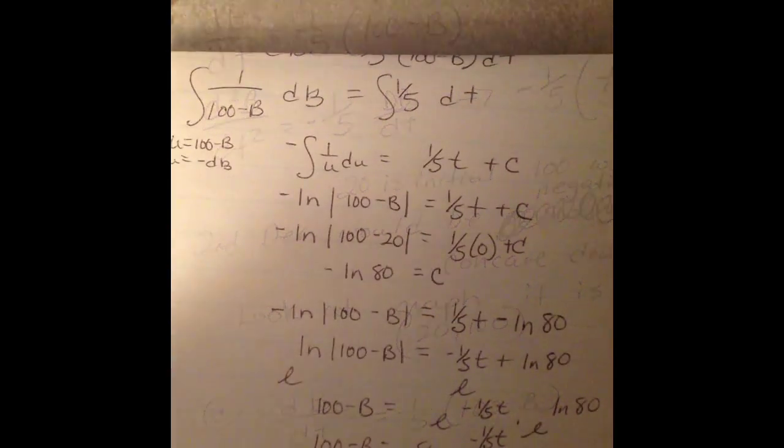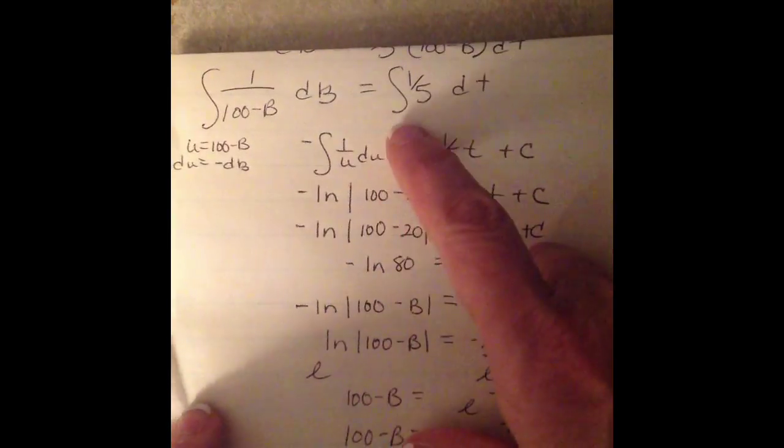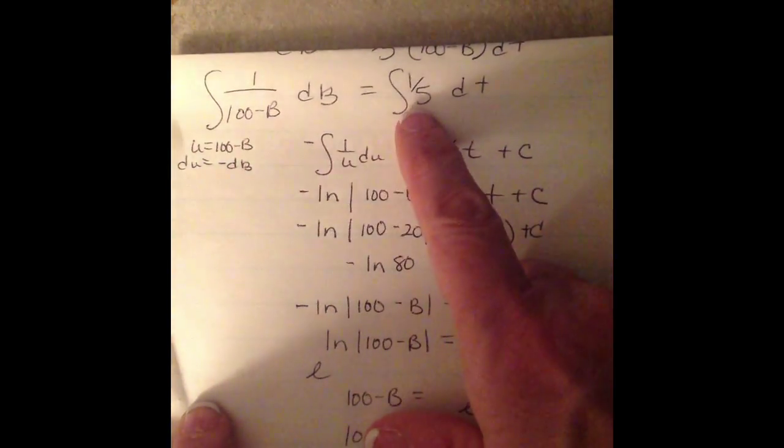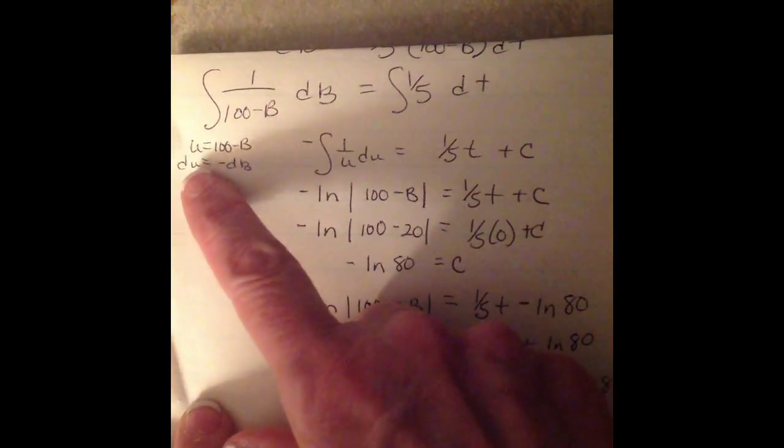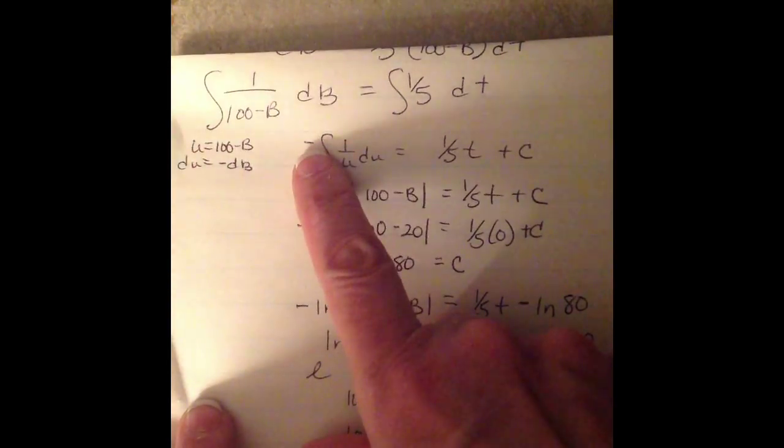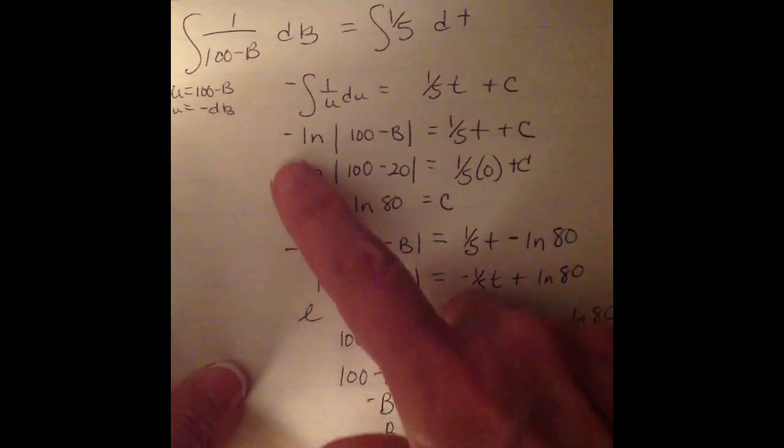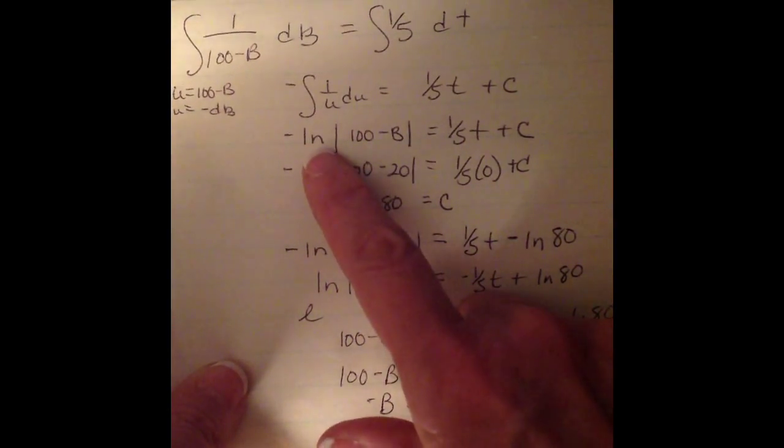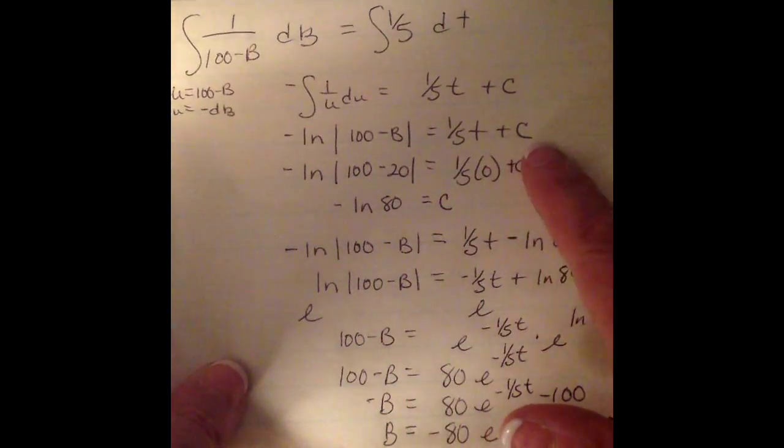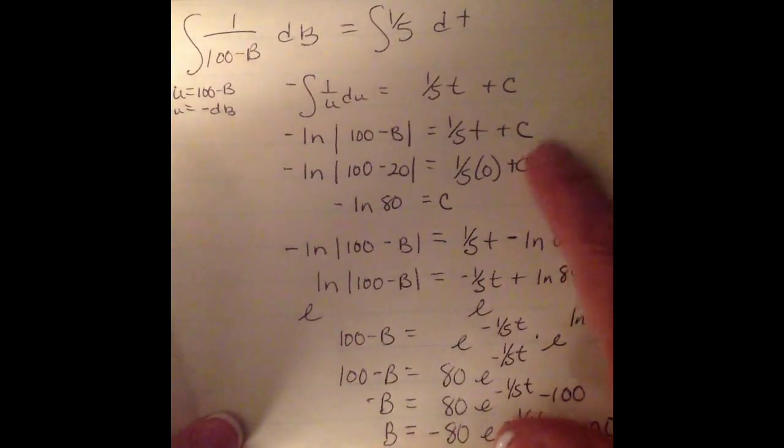And we're going to multiply by dt. Then you're going to divide by 100 - b. So once you divide, then you're going to integrate. And I'm going to do u substitution. So I'm going to put negative out here. -1/5 t + c. So I get -ln(100 - b) and I get 1/5 t + c.